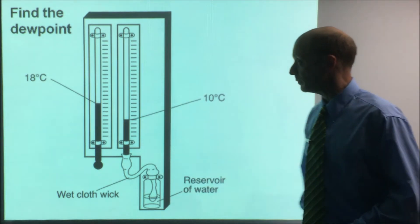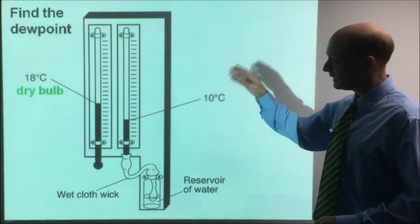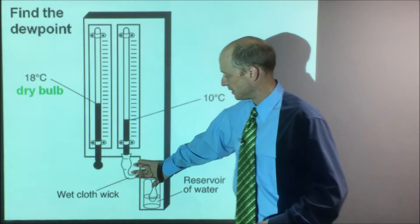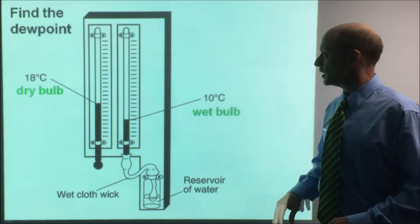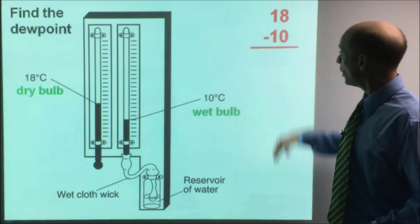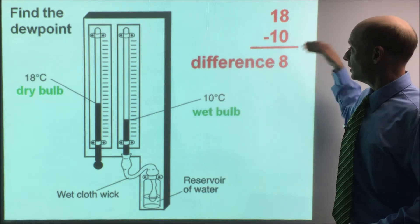Now the dew point is neither of these numbers here. What you have here, 18C, that's the dry bulb. That's the dry thermometer. This is the wet one here. So that's called the wet bulb. So what you need to do here is this. You need to find the difference between them. So 18 minus 10, the difference is eight.